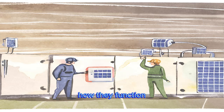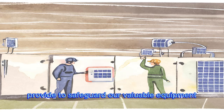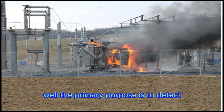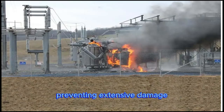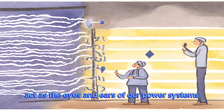In this video we'll explore why relays play a crucial role, how they function, and the specific types of protection they provide to safeguard our valuable equipment. The primary purpose is to detect and respond to faults swiftly, preventing extensive damage. Protection relays act as the eyes and ears of our power systems.